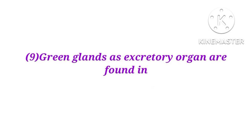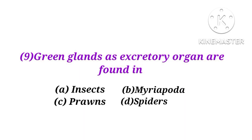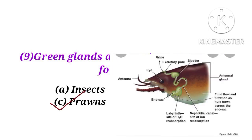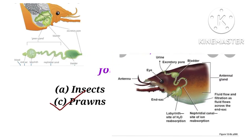Number 9. Green glands as excretory organs are found in insects, myriapoda, prawns, or spiders? The answer is C. Prawns have green glands for excretion.